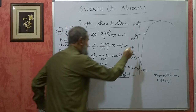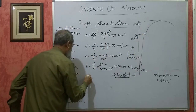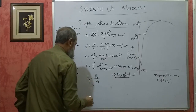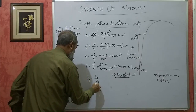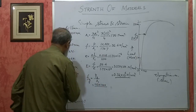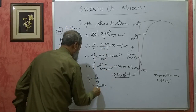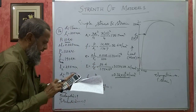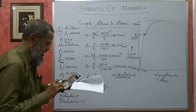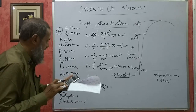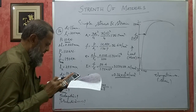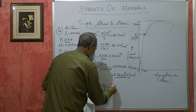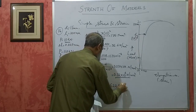Next he wants yield stress — stress at that yield point. Yield stress = yield load / initial area = 110,000 / 176.7 = 622.5 Newton per mm square.